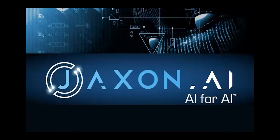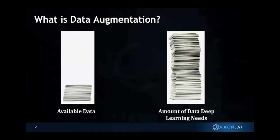The general progression here is: what is data augmentation, why do we need it, what does it look like in images and why is that easy, and what does it look like in text and why is that hard. Starting out: deep learning needs a lot of data, and sometimes what we have available is not enough, even if it's a million examples. Data augmentation creates a larger and more diverse dataset by generating extra examples based on what you already have.